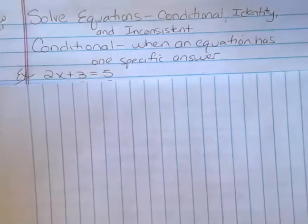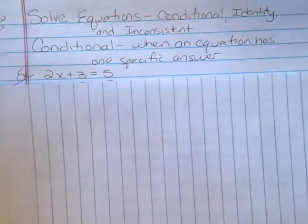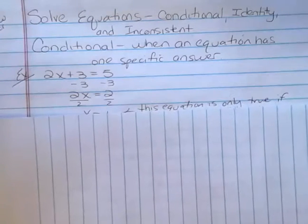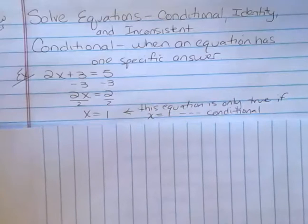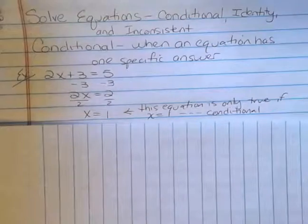An example that you mostly deal with conditional equations: 2x plus 3 equals 5, subtract 3 from both sides, divide both sides by 2, and you get x equals 1. This equation is only true if x equals 1, therefore it's conditional, and that's mostly what you've been solving as you've worked through algebra.